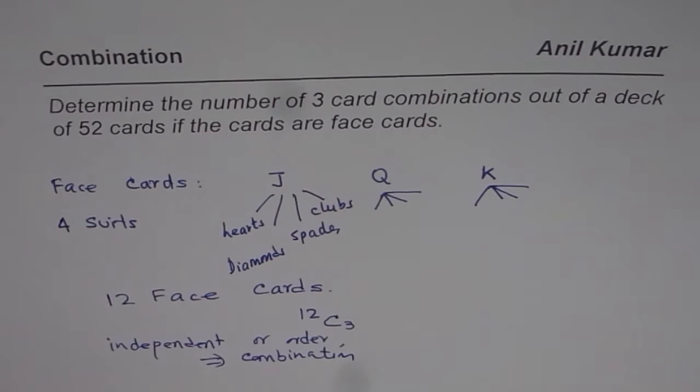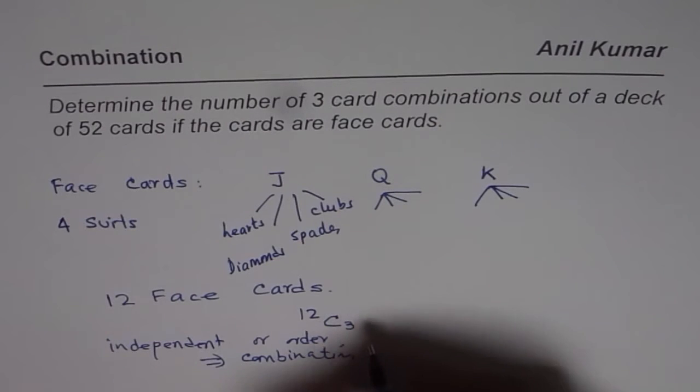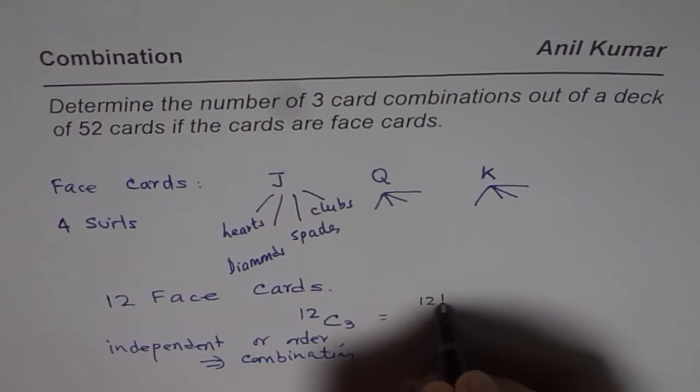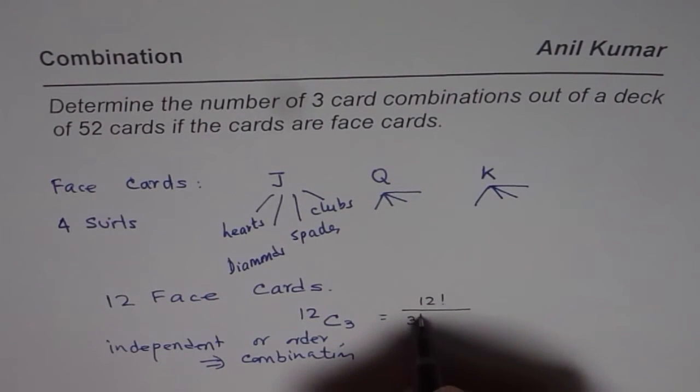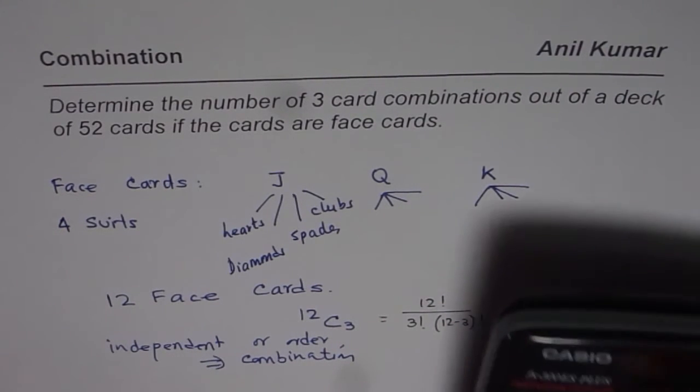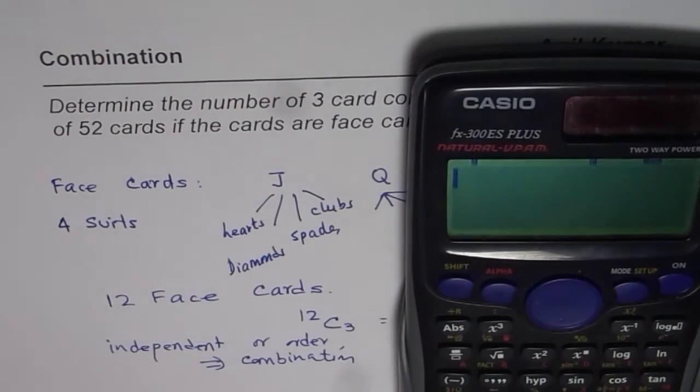These are the things which you need to understand when you solve such questions. Now, 12C3 could be calculated using the formula, as you know, that is 12 factorial divided by 3 factorial times 12 minus 3 factorial. Or you could use directly the combination NCR function on the calculator.